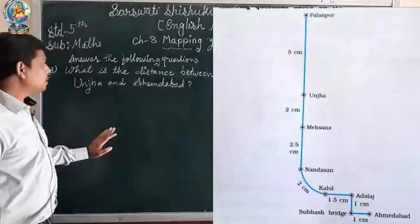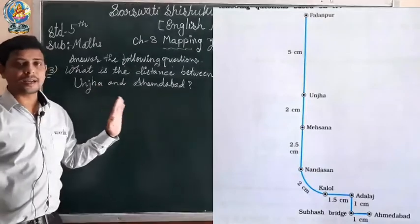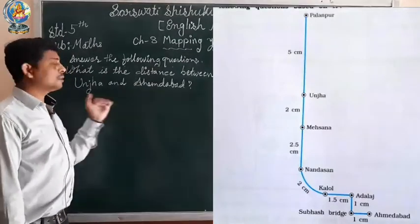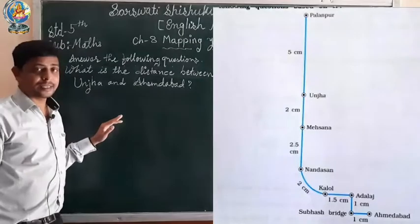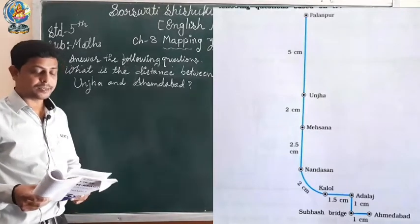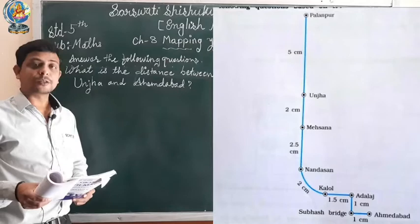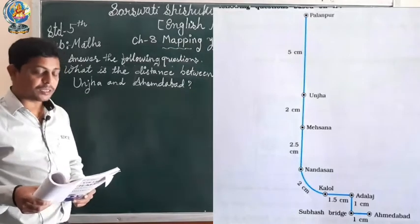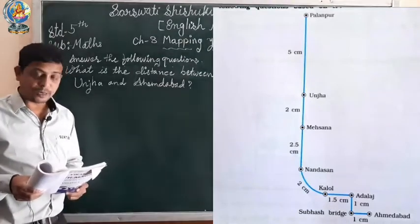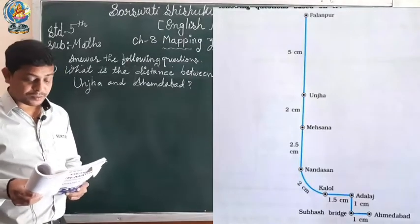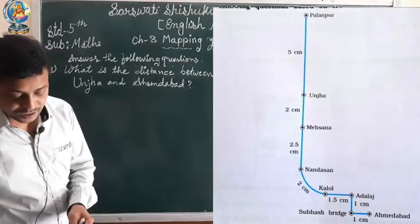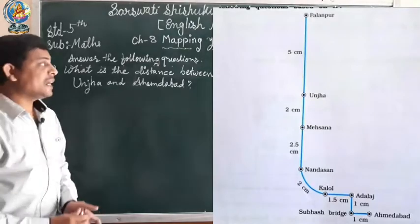Question number 3: What is the distance between Unja and Ahmedabad? We have to find the distance in centimeters from Ahmedabad to Unja on the map. From Unja to Mahsana is 2 centimeter, from Mahsana to Nandasar is 2.5 centimeter, from Nandasar to Kalol is 2 centimeter, from Kalol to Adalaj is 1.5 centimeter, from Adalaj to Subhash Bridge is 1 centimeter, and from Subhash Bridge to Ahmedabad is 1 centimeter. The total is 10 centimeter.